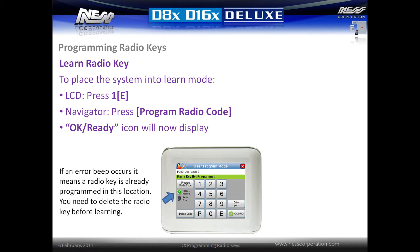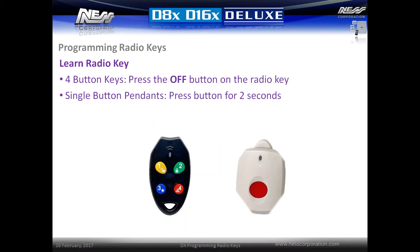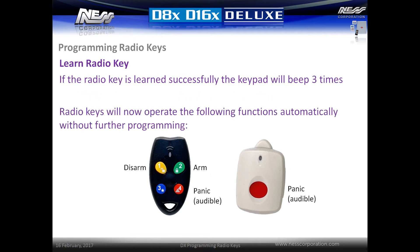To learn a radio key into the user location, on an LCD keypad press 1e; on a Navigator keypad press the radio code button. The ready icon will now display and the system is ready to accept the radio code. If an error beep occurs, a radio key is already programmed in the location and must be deleted before learning a new one. For four-button radio keys press the off button; for single-button pendants press and hold the button for two seconds. If learned successfully, the keypad will beep three times.